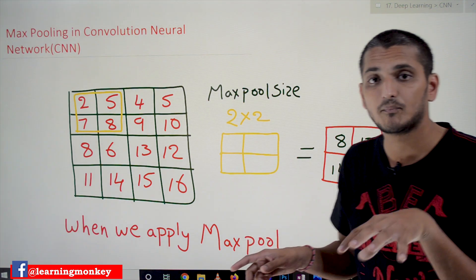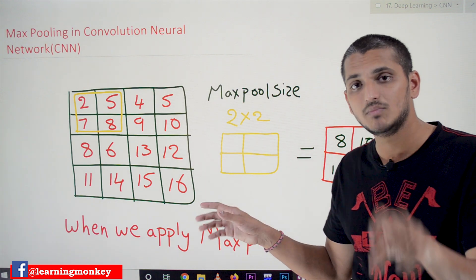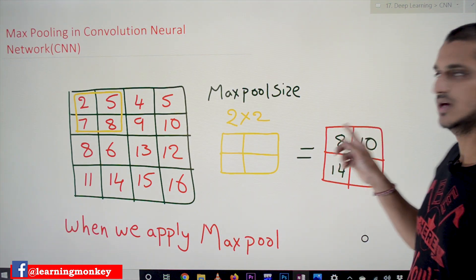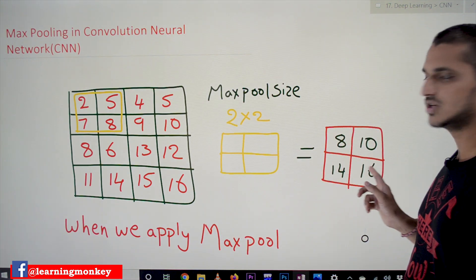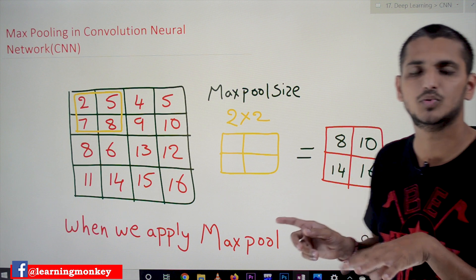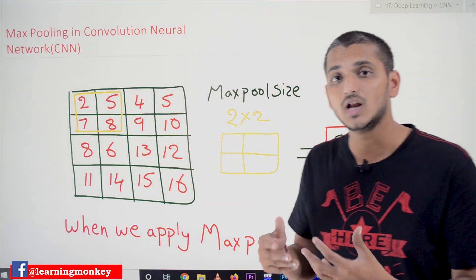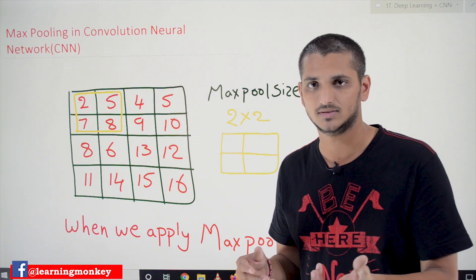So after applying max pooling, the output image we got contains 8, 10, 14, and 16. That is how we apply max pooling on our images.